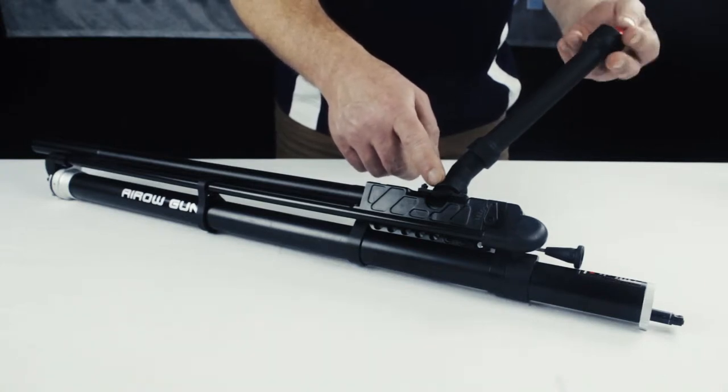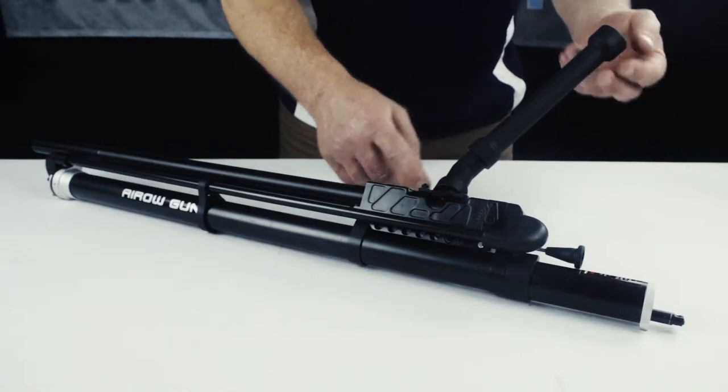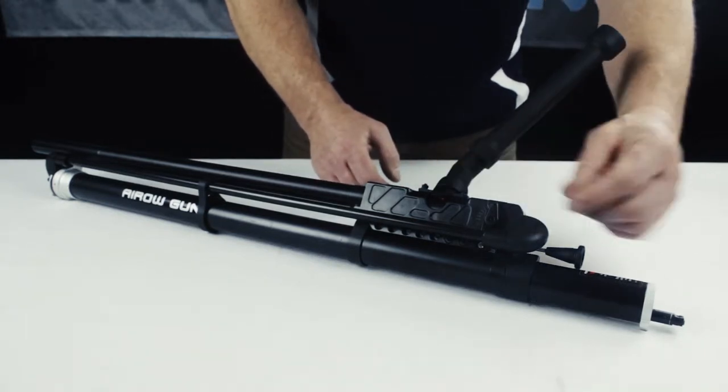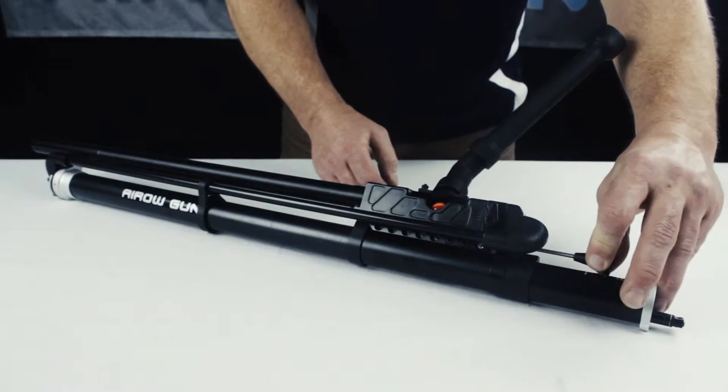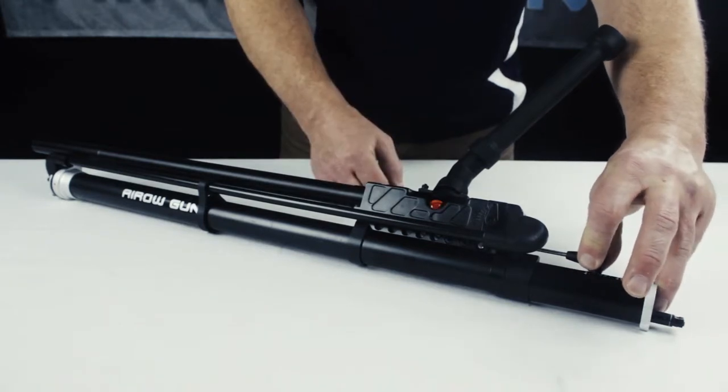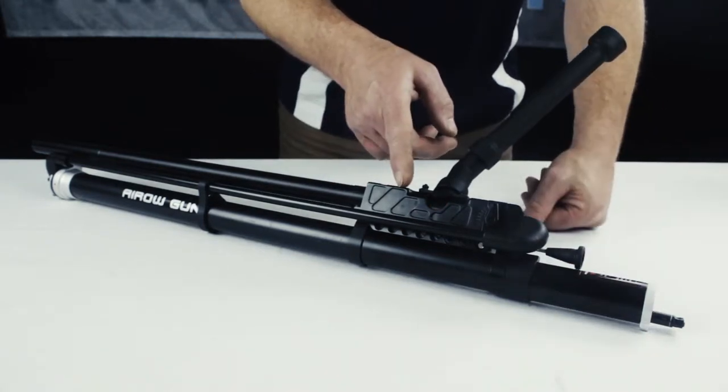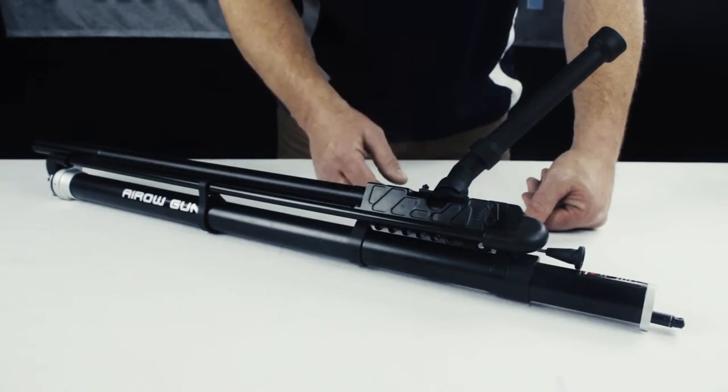Now your paintballs themselves will load right here into the feed tube. And then to load it into the receiver you'll need to cock one in. So just pull this back. You can see the paintball drop down and in. When you release it, it pushes it up into the receiver. So now at this point you're ready to draw and release your bow.